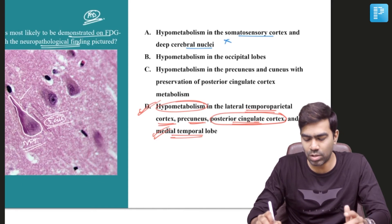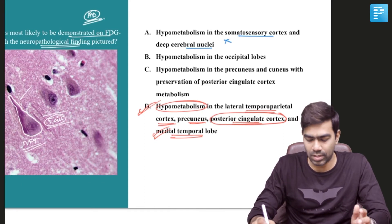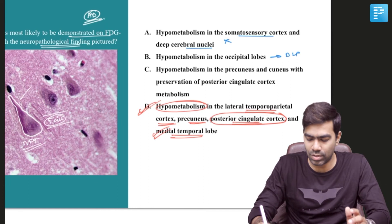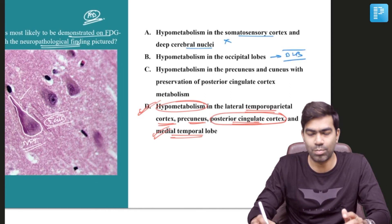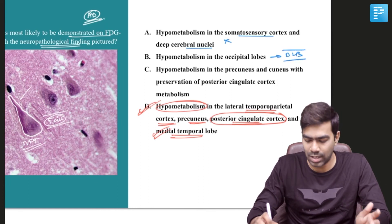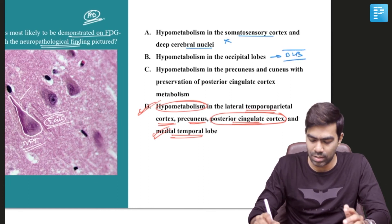Option B states hypermetabolism in the occipital lobes. This is consistent with the diagnosis of dementia with Lewy bodies, not Alzheimer's disease.